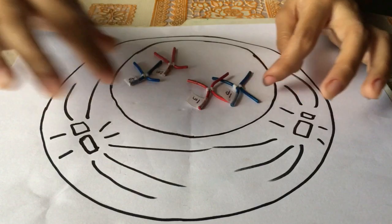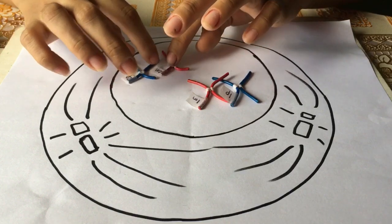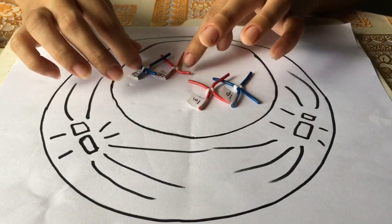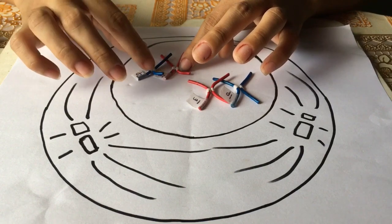Meiosis I. In metaphase I, the pairs of chromosomes may then exchange bits of DNA in a process called recombination or crossing over.